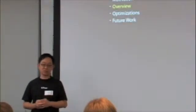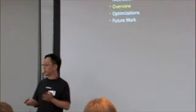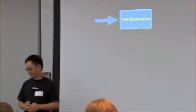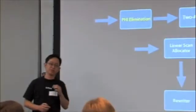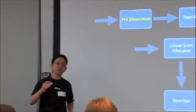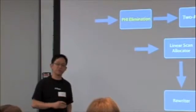But first, let's take a look at the register allocator and all the passes involved. The register allocator is basically divided into five parts. The PHI elimination and the two-address pass move LLVM code out of SSA form.